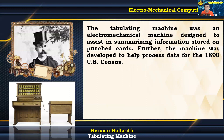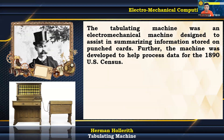The tabulating machine was an electromechanical machine designed to assist in summarizing information stored on punched cards. It was developed to help process data for the 1890 US Census. The machine's objective was to accelerate the conversion of census data into a usable format to satisfy the requirements of a nation undergoing a large increase in population from one decade to the next.